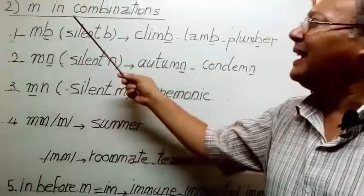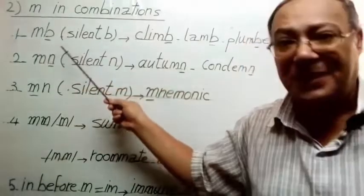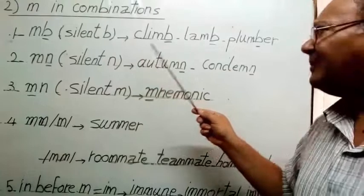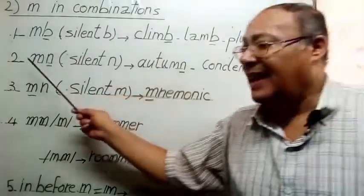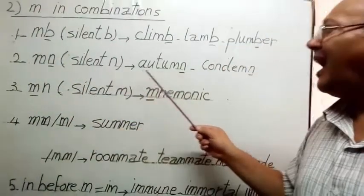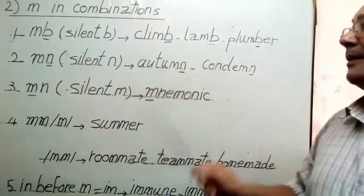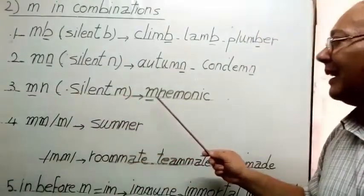M in combinations: MB with silent B - climb, lamb, plumber. MN with silent N - autumn, condemn. MN with silent M - mnemonic.